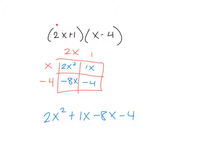And what this has done is made sure that every term, that the 2x multiplies by both the x and the negative 4, and that the 1 multiplies by both the x and the negative 4. And that gives us our overall solution to this multiplication problem, but we need to simplify. So if we simplify, these two combine to give us negative 7x. And so that is using the area model to multiply two binomials.